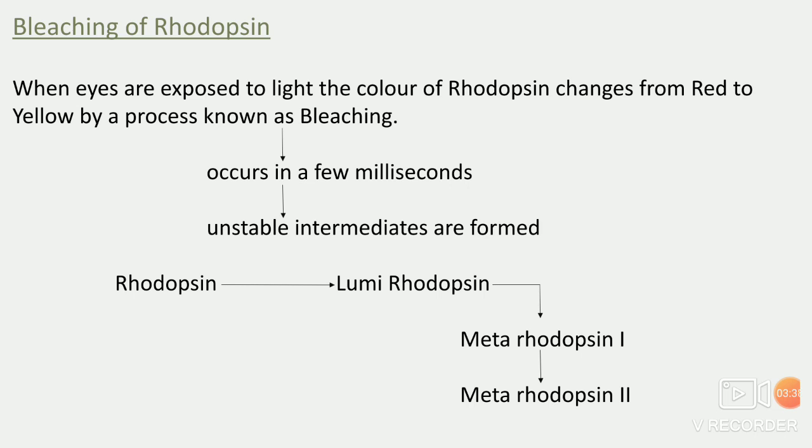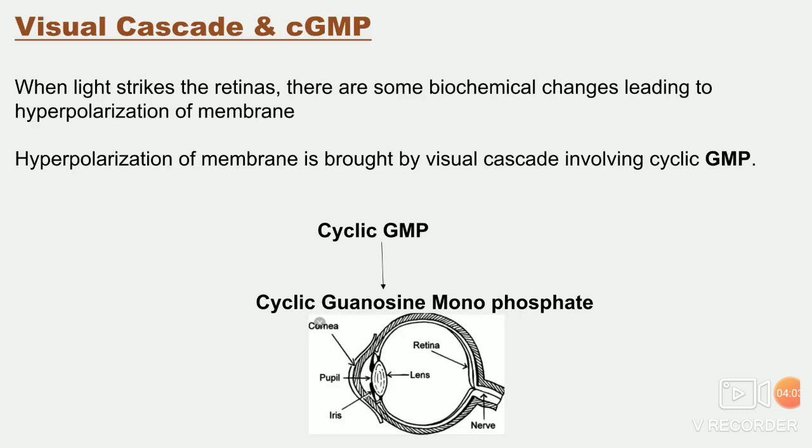Few milliseconds में unstable intermediates form होंगे. Light आँखों पे पड़ी तो rhodopsin change होगा to lumi-rhodopsin — that is the yellow color — then unstable intermediates कौन से हैं: metarhodopsin 1 and then metarhodopsin 2. These are unstable intermediates.